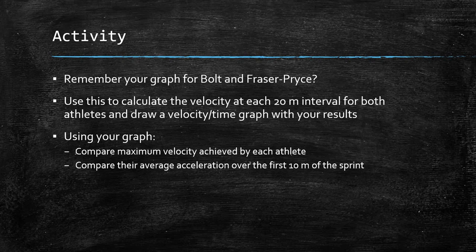Using the data you created for your Bolt and Fraser-Price distance over time graph, use that same data to calculate the velocity at each 20-metre interval and draw a velocity-time graph using your results. Compare the maximum velocity achieved by each athlete, and compare their average acceleration over the first 10 metres of the sprint. Pause the video, and once you've done the graph, take a photo to send to me via email or Teams.